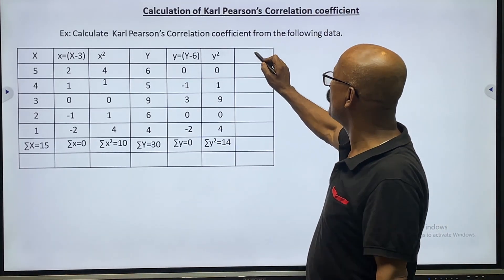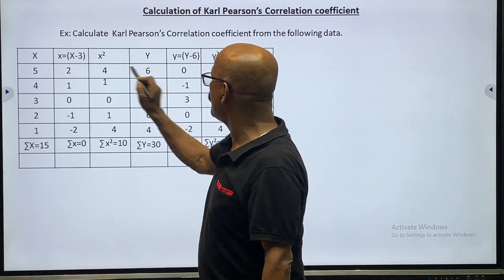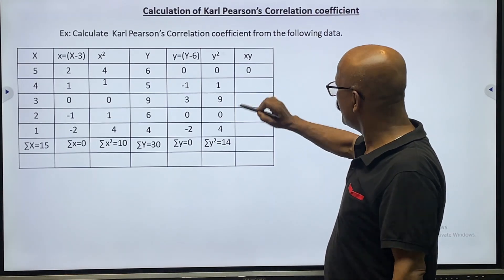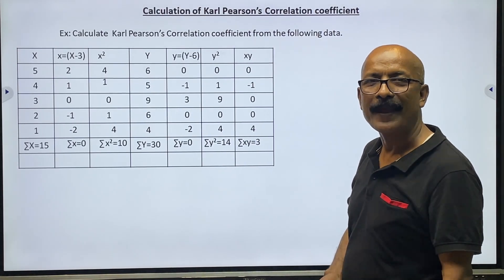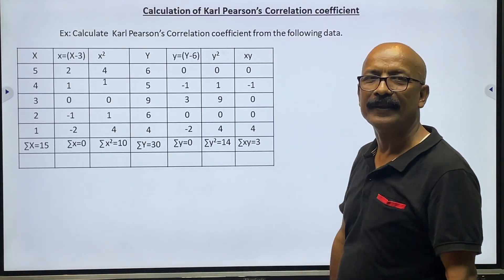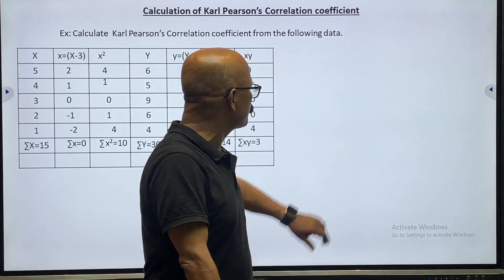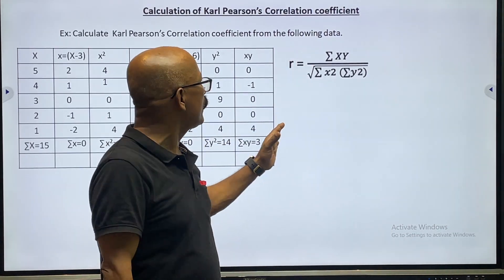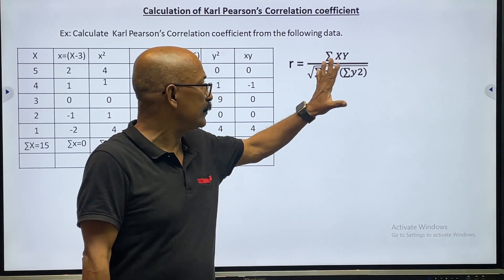Now we have to find out the value of XY — that means multiplying each small x by its corresponding small y. For example, 2 multiplied by 0 equals 0. By this method we calculate all the XY values, and the summation XY is equal to 3. The formula for the coefficient of correlation r is: summation XY divided by the square root of summation x squared times summation y squared.